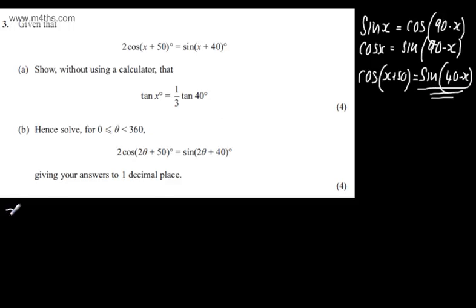So this is one approach. We're going to have 2 sin(40 - x) equals sin(x + 40), or if I wanted, I could say 40 + x.